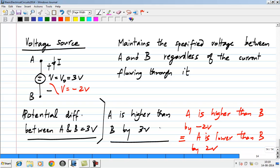It does not matter what the value of I is, the voltage between A and B is maintained to be 3 volts or whatever V naught is.